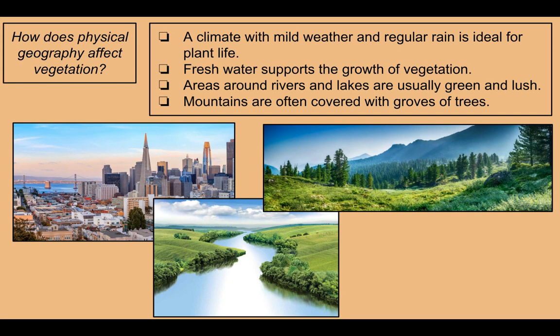How does physical geography affect vegetation? A climate with mild weather — not too hot, not too cold — and regular rain is ideal for plant life. Fresh water, meaning not salt water, supports the growth of vegetation. Areas around rivers and lakes are usually green and lush, and mountains are often covered with groves. The center picture shows how areas around rivers can be very green with lots of plant life. The right picture is a mountain grove full of trees. This city with a mild climate — never too hot or cold — is San Francisco.